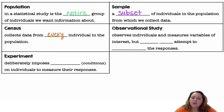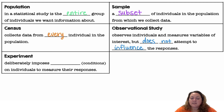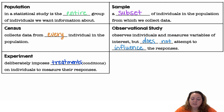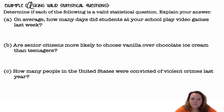An observational study observes individuals and measures variables of interest but does not attempt to influence the responses — so you're just observing. An experiment deliberately imposes treatments on individuals to measure their responses.